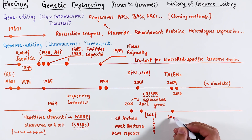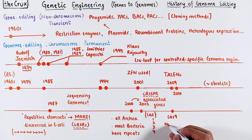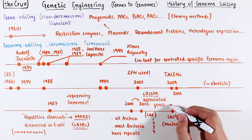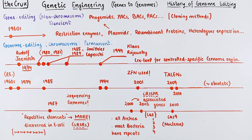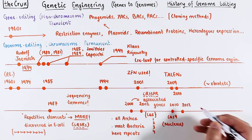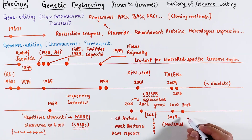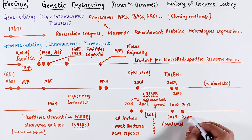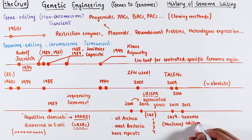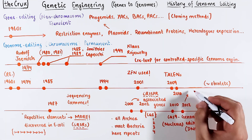In 2009, a single Cas9 gene, which is a nuclease, was identified — a system that was simple enough to be used in genome editing. And a few years later, the use of Cas9 in DNA editing became a reality, which was awarded the 2020 Nobel Prize.